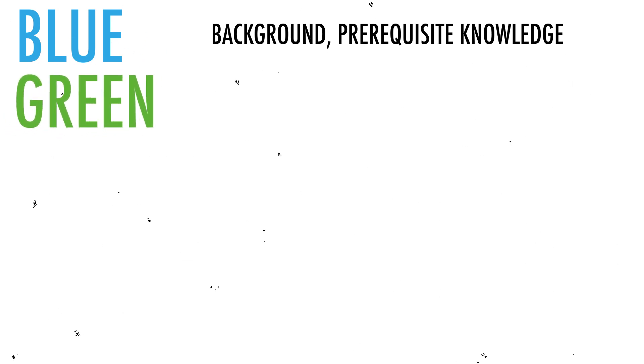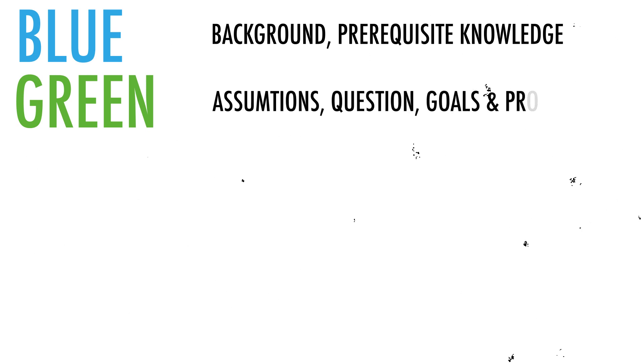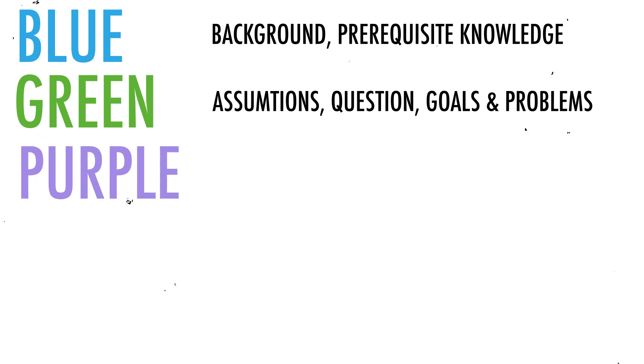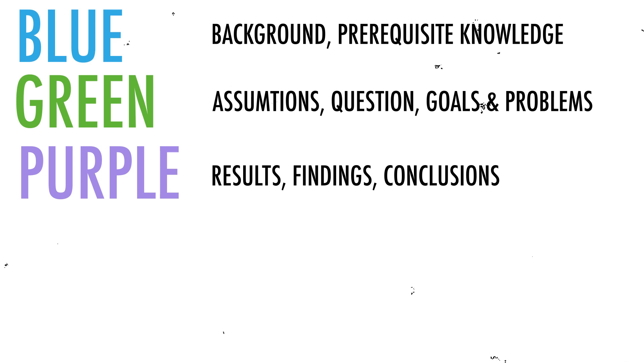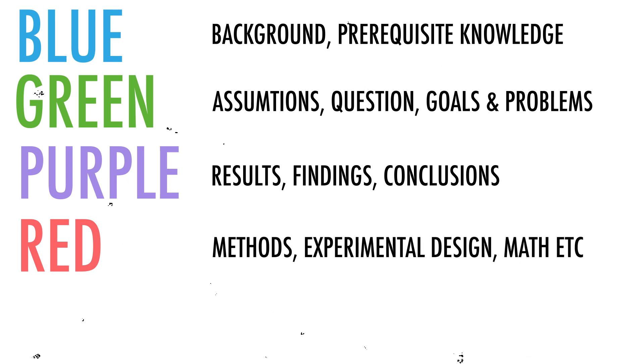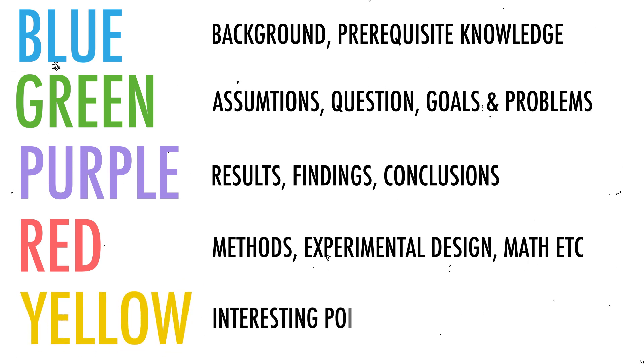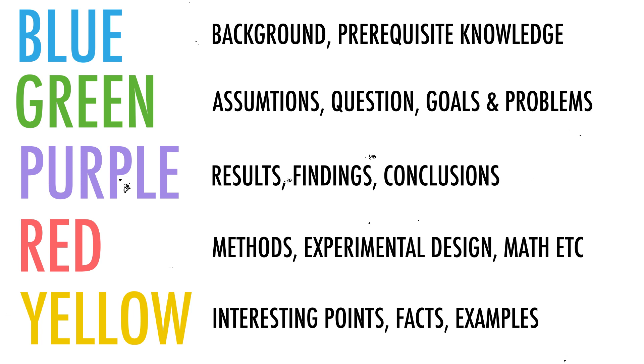I've settled on using five highlighting colors across all the papers I read, and each of them has its own specific meaning. Blue is for background information — prerequisite facts important for proper reading, historical perspective if important, and non-obvious acronyms used throughout the paper. Green is for assumptions the paper is based on, questions it asks, and problems it's concerned with. Purple is the heart of the paper — it represents the main new results, findings, and conclusions. Red is for methodology — what experimental or theoretical techniques the authors used. And finally, yellow is for interesting examples and facts that are not really significant for the paper, but that I personally resonate with and find quite interesting and cool — kind of like dessert knowledge.